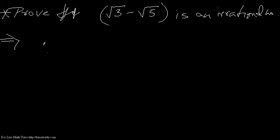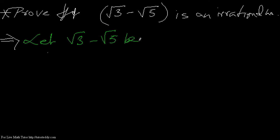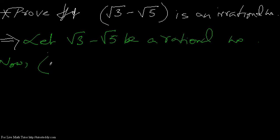we assume that that number is rational and then proceed to see what happens. So let √3 minus √5 be a rational number. Now if that happens, we rationalize this number.